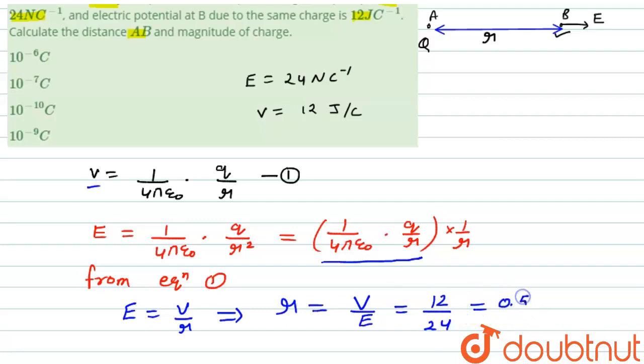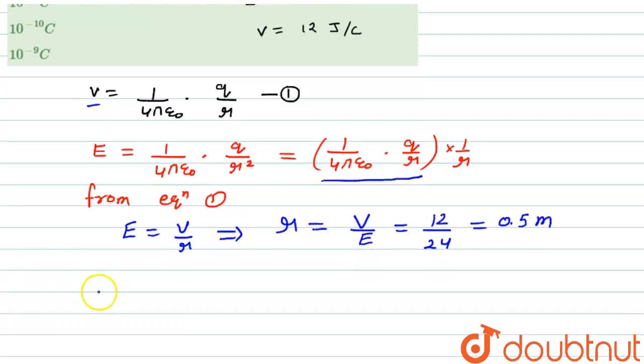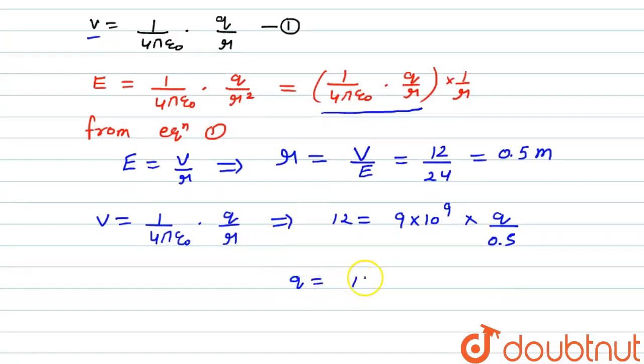From first equation, we can write V equals 1 upon 4πε₀ Q by R. We can put the value here: V is 12 and 1 upon 4πε₀ will be 9 × 10⁹ and we have to find the value of Q and R is 0.5.